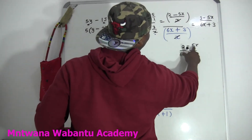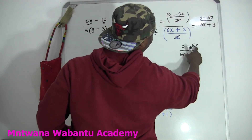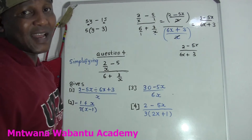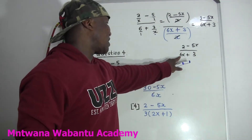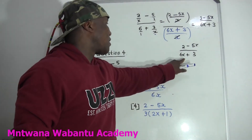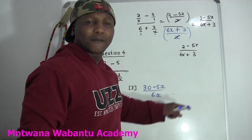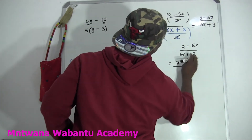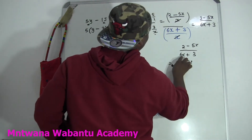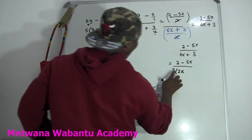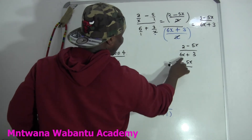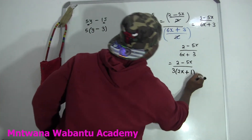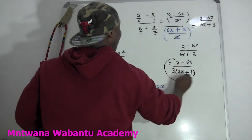If you look here on top, we don't have any number common for both terms. But the denominator — we can take 3 out because 3 is common for both 6x and 3. Take 3 from 6x, you're left with 2x. Take 3 from 3, you're left with 1. So 3 times (2x plus 1). This is the final answer.